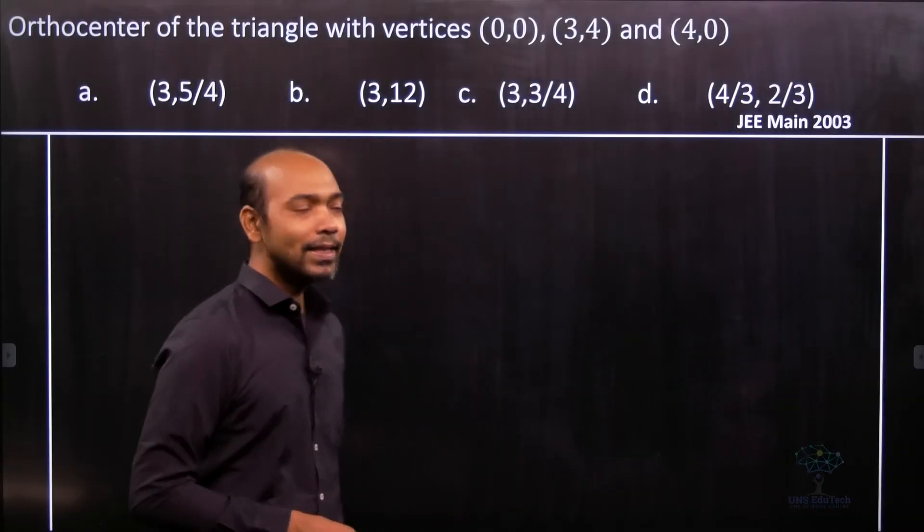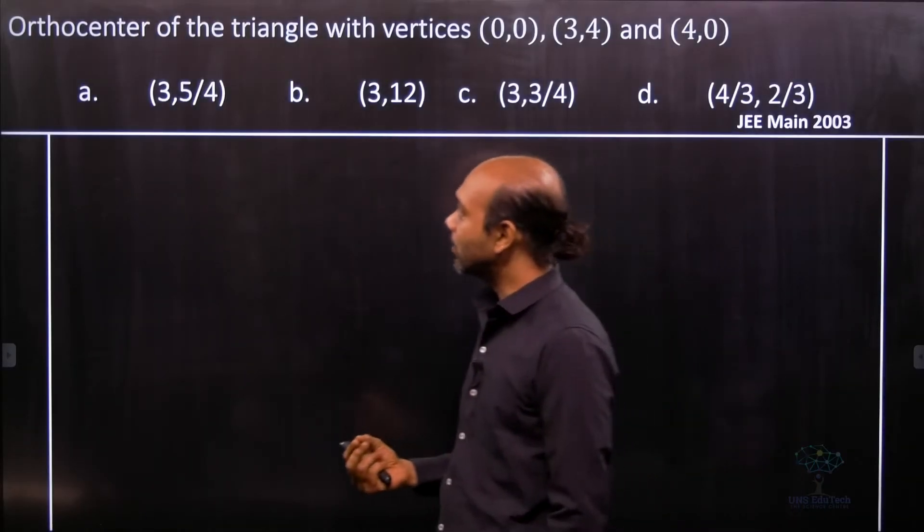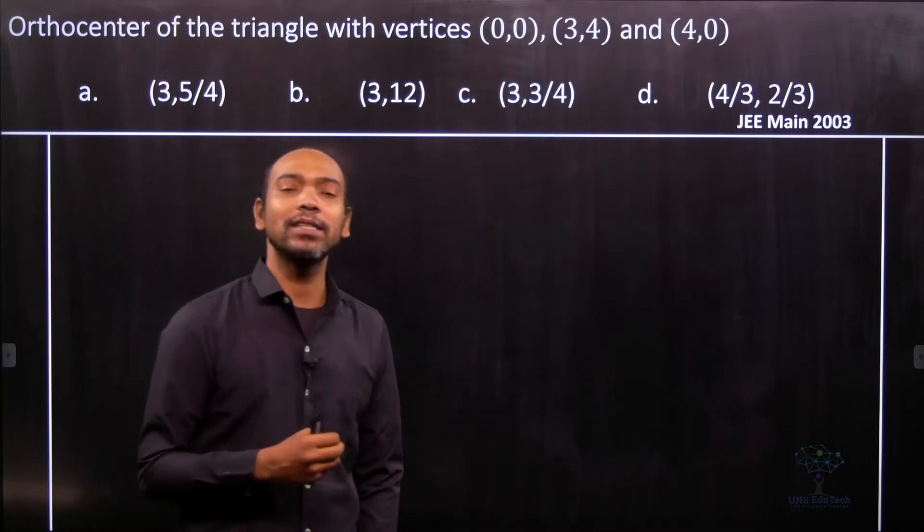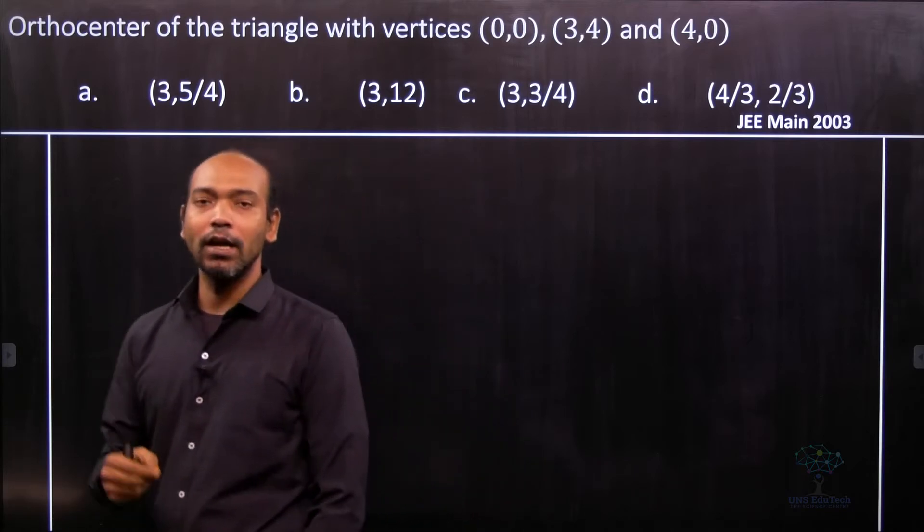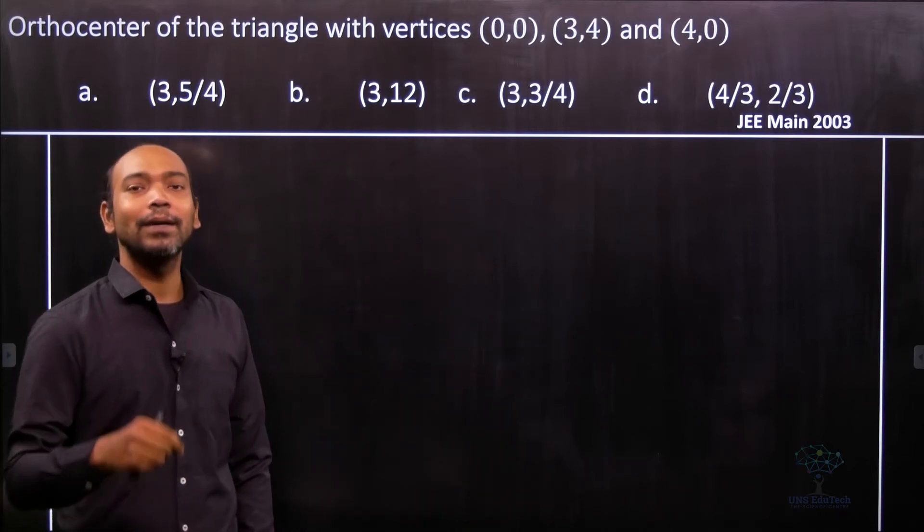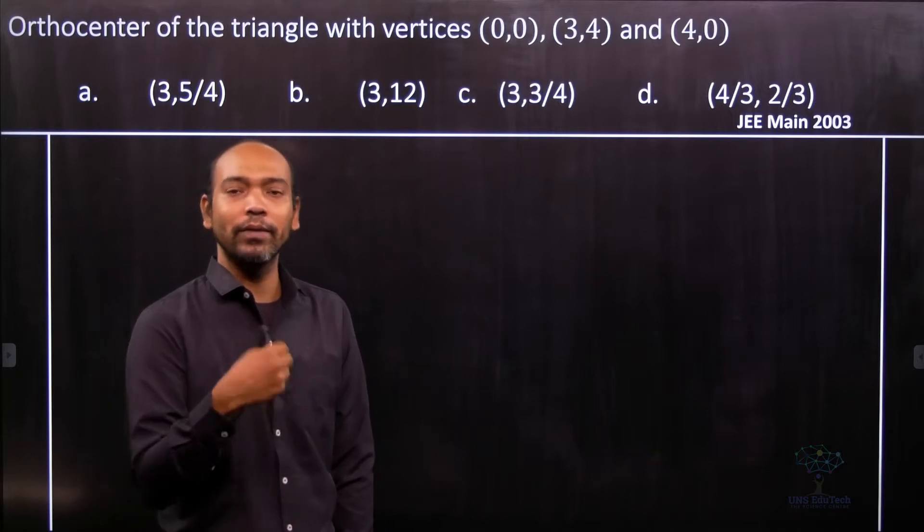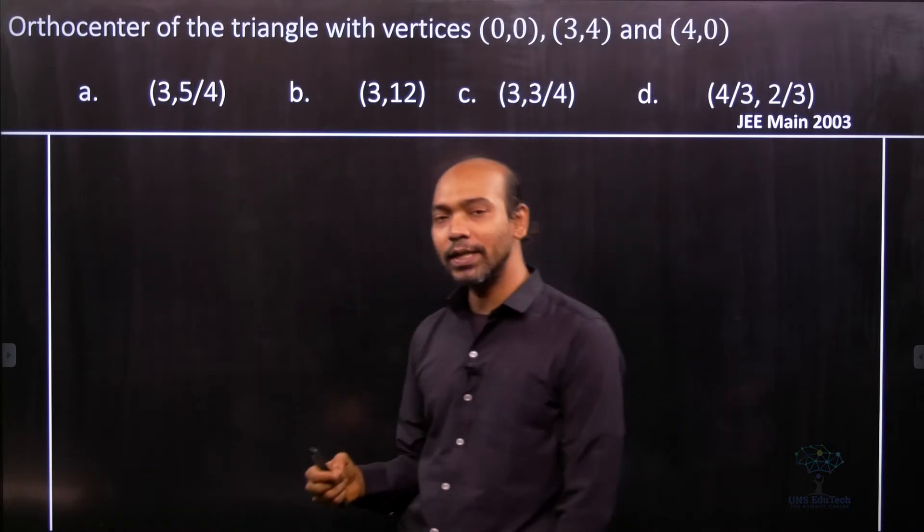Hi. See this, in this problem we are going to find out the orthocenter of the triangle with some given vertices. So what is the orthocenter? Orthocenter means to find the orthocenter we have to drop the perpendicular from one vertex to its opposite sides and wherever all those perpendiculars are intersected that will be the orthocenter for us.